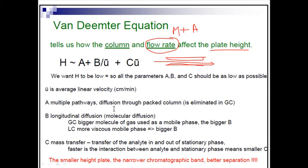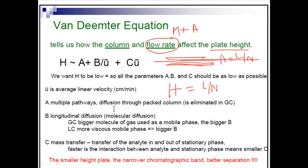What do we mean by plate height? It is a measurement — remember H equals L by N. The plate height is the measurable amount of error. Any mistake throughout the column will eventually result in miss-separation or bad results, and can be measured with H, which we call the plate height.